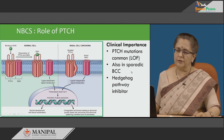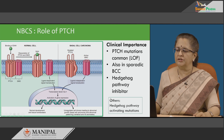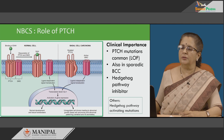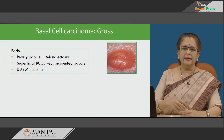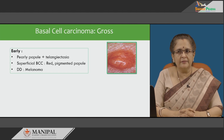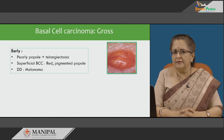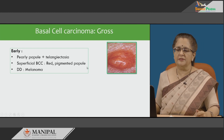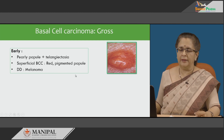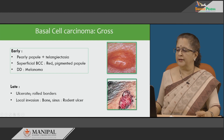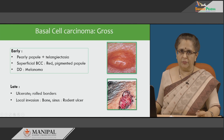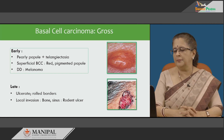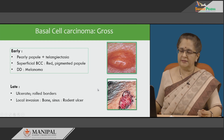Grossly, early basal cell carcinoma appears as a pearly papule with numerous blood vessels on the surface and a shiny appearance. These vessels represent ectatic or dilated vessels just below the epithelium, known as telangiectasia. Superficial basal cell carcinoma can also appear as red pigmented papules, which must be differentiated from melanoma. Later, these ulcerate with rolled-out borders; in some cases the ulcers may invade deep into bone, especially where subcutaneous fat is thin such as the scalp. Such deeply invasive ulcers are known as rodent ulcers because they burrow inside.